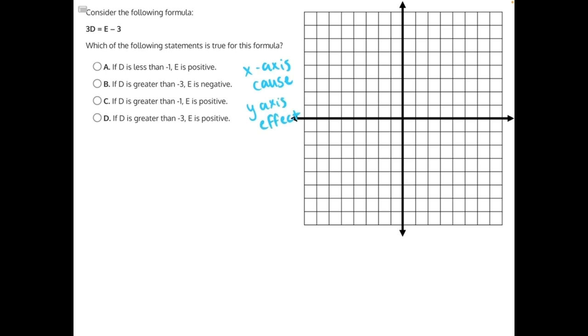So if we take a look at our answer choices, we can see that something is always happening to D. If D is less than or greater than something, then that has a direct impact on E. So that means we can label our axes. We'll have the easiest time visualizing this graph if we label D as our x-axis and E as our y-axis.